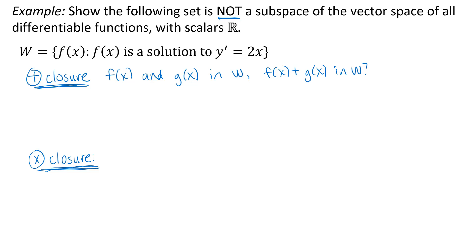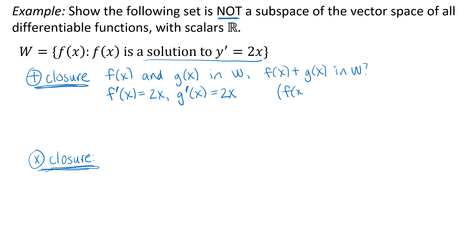Starting with two functions in set W, what does it mean to say those two things are in W? It means they make that differential equation true. So if f(x) and g(x) are in set W, then f'(x) = 2x and g'(x) = 2x — that's what it means to be in the set. Then what I want to think about is: what would it mean for their sum to be in the set? The derivative of the sum of those two functions should also equal 2x if it's in the set.